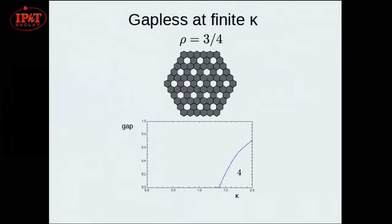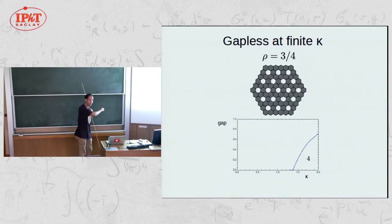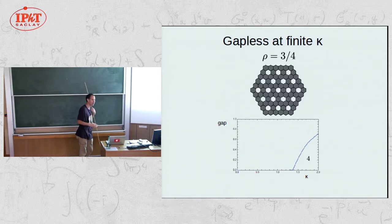[Audience question]: What is the degeneracy of the ground state in the gapless case? [Answer]: I don't know — that's why we're working on the fermion parity issue. To answer ground state degeneracy in the original spin model, you need to know the correct fermion parity to apply. Without doing this carefully, you can't give the correct answer.